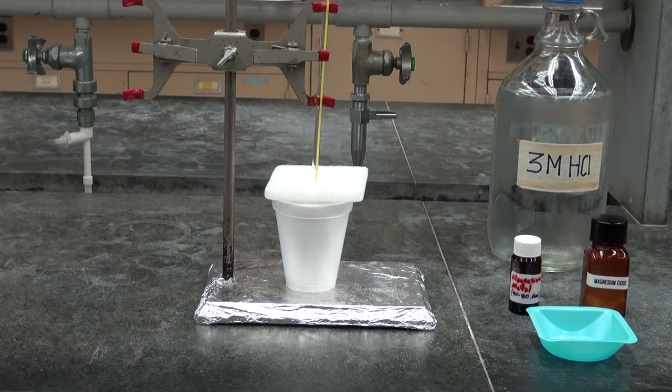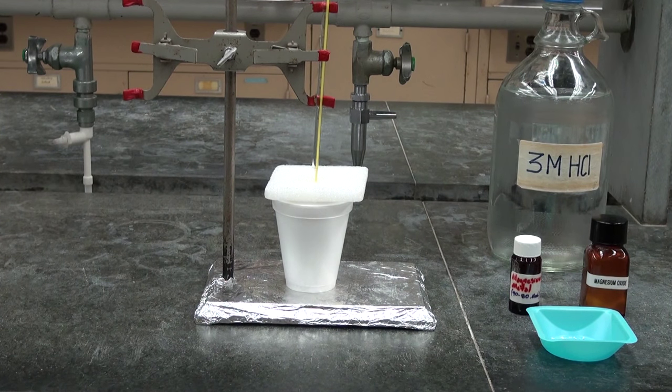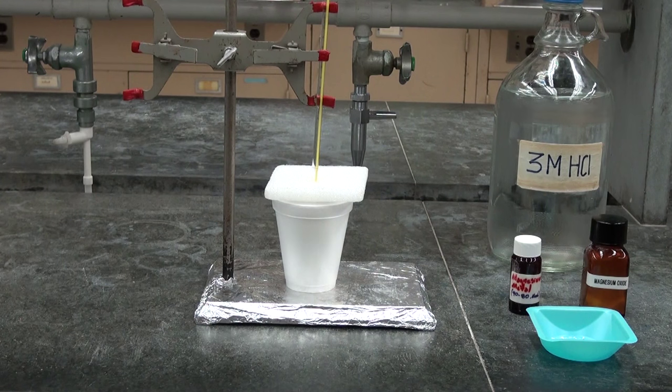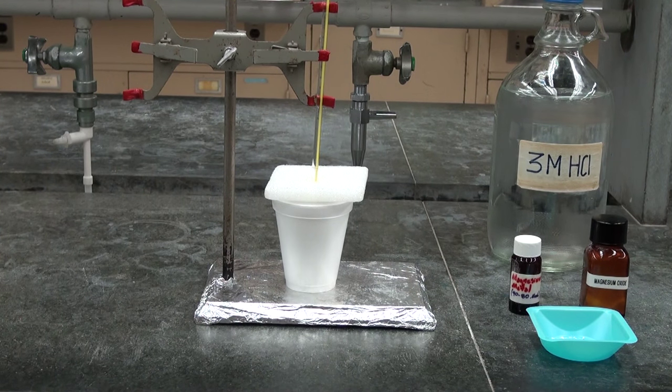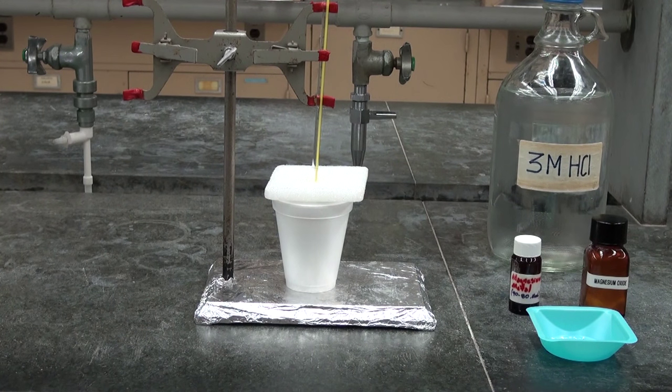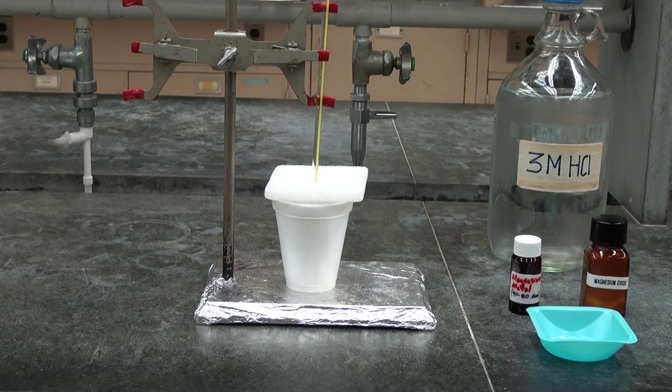We have previously measured the mass of the empty coffee cups, then added approximately 100 milliliters of hydrochloric acid and remeasured the mass. The difference of those two measurements gives us the mass of the hydrochloric acid, and that can be done on a top loading balance.